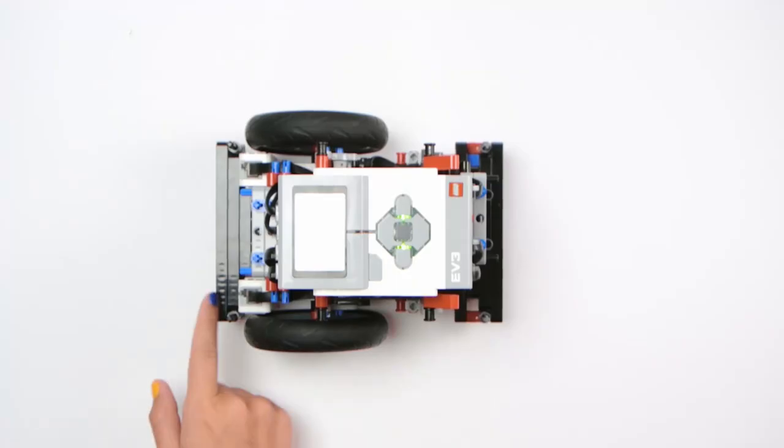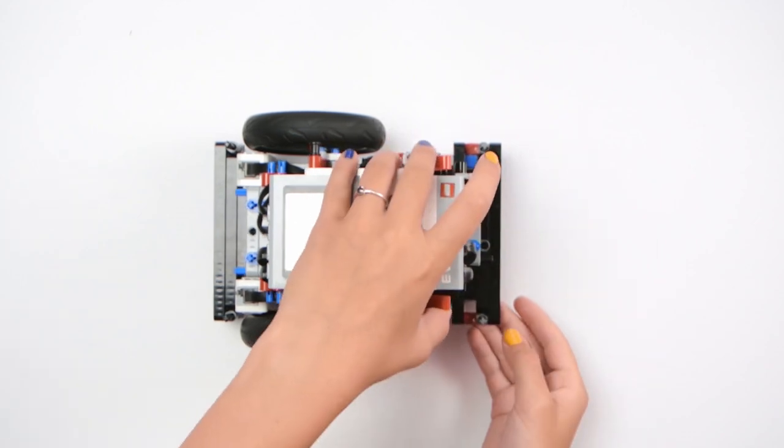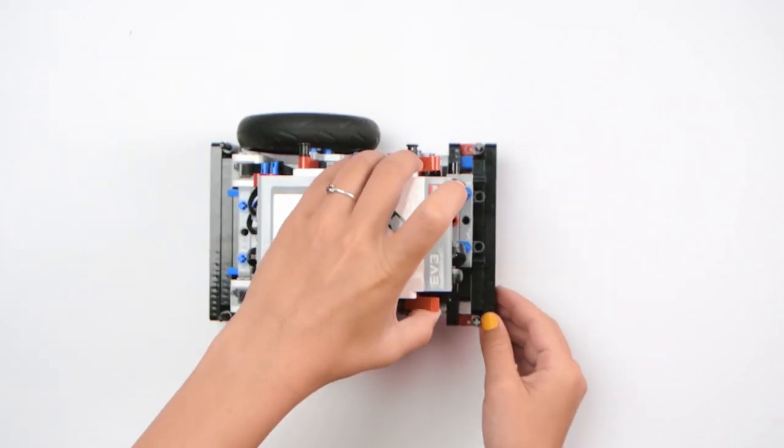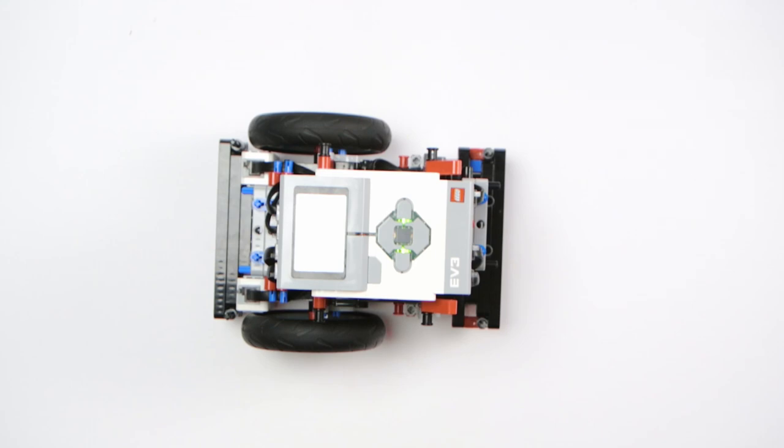We have one bumper on the front and the back. These are good for lining up with walls, and they also have studs on them, which can take passive attachments. The passive attachments are really easy to put on just like this.